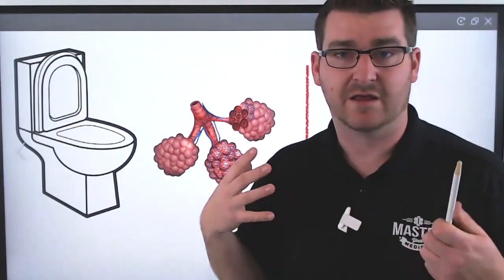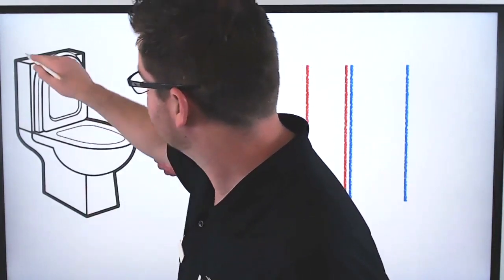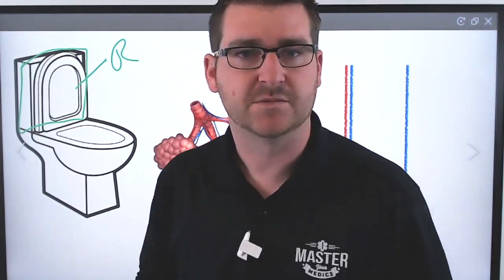One result of that pulmonary hypertension is something called pulmonary edema. A way I like to describe pulmonary edema is using a toilet bowl. The tank of the toilet is like the right side of your heart.